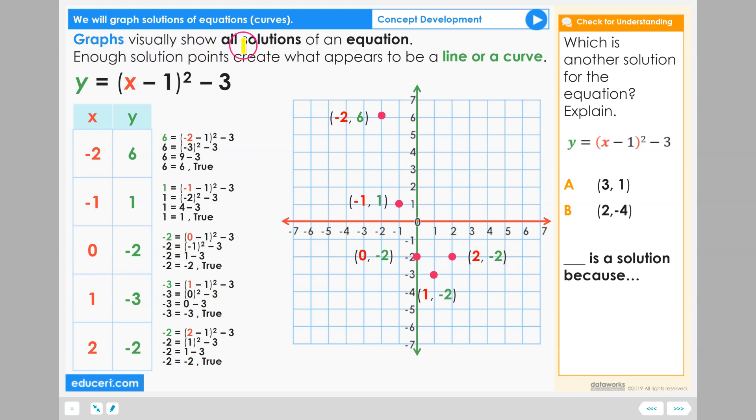Graphs visually show all solutions of an equation. y equals the quantity x minus 1 squared minus 3. And here are ordered pairs that make the equation true.